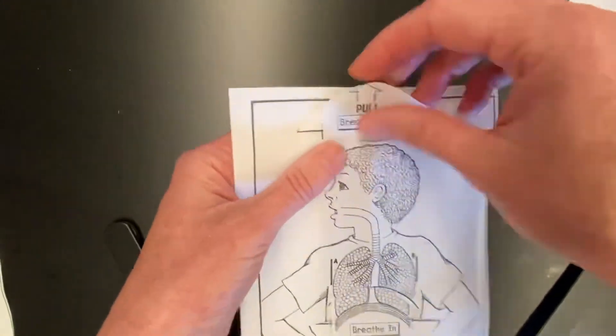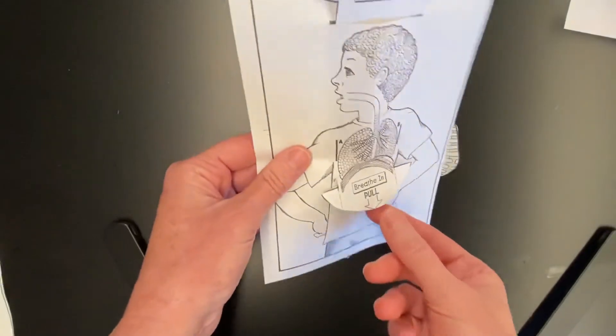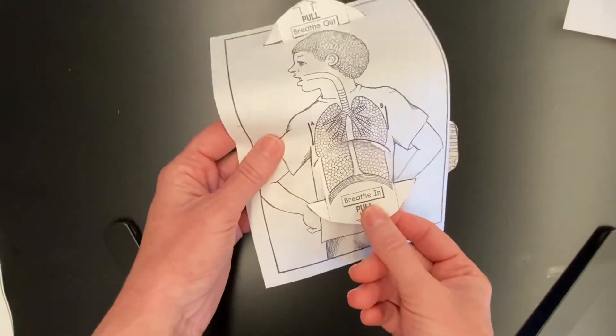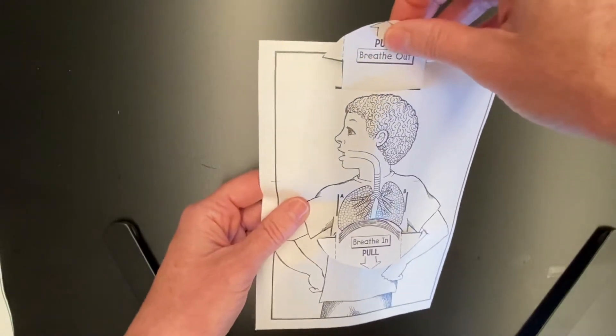Then I'm going to fold the little pieces. When I breathe in, I pull it down and my lungs get bigger. When I breathe out, I pull up and my lungs get smaller.